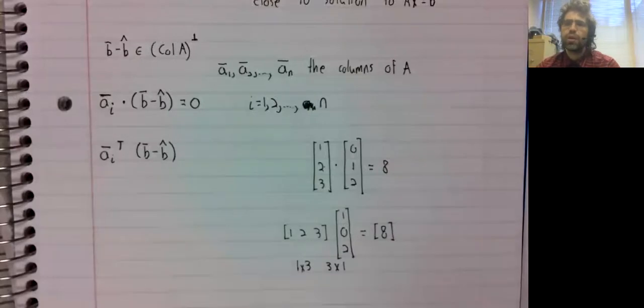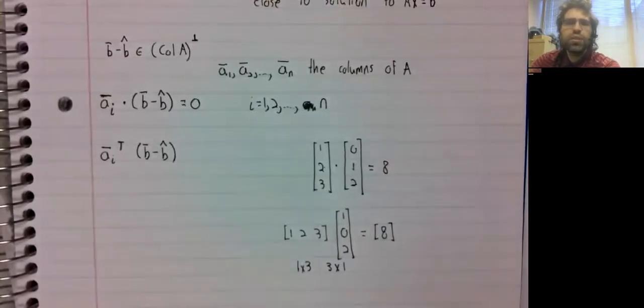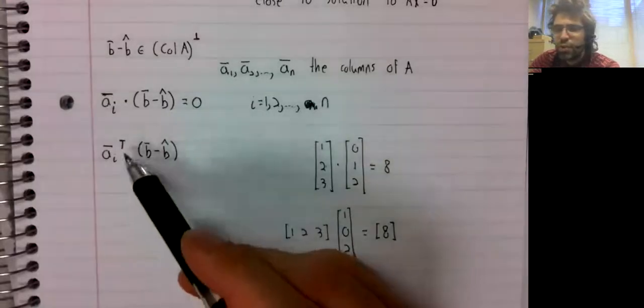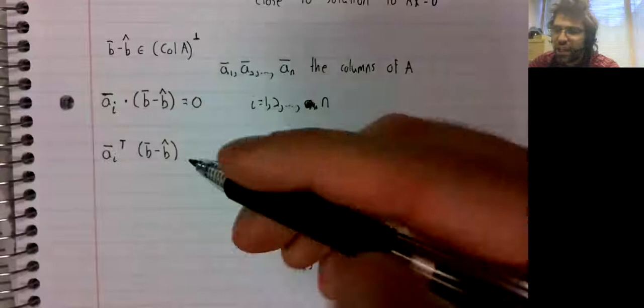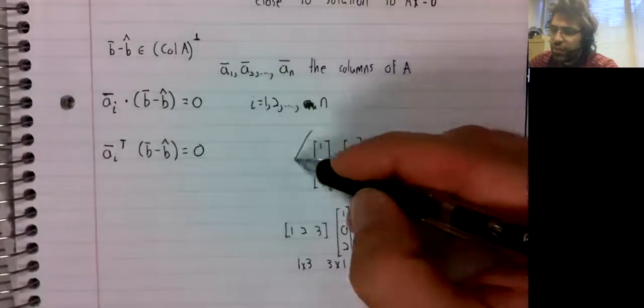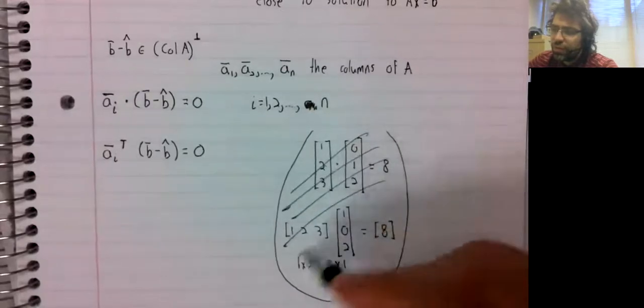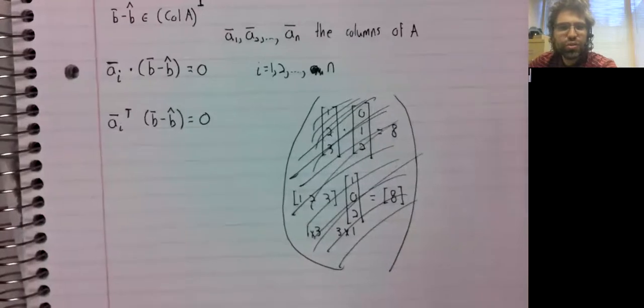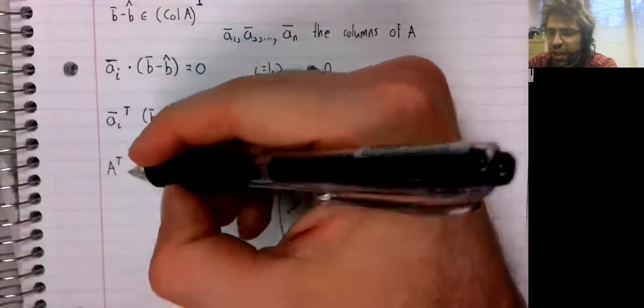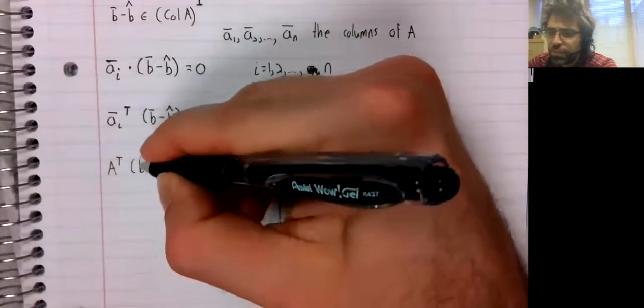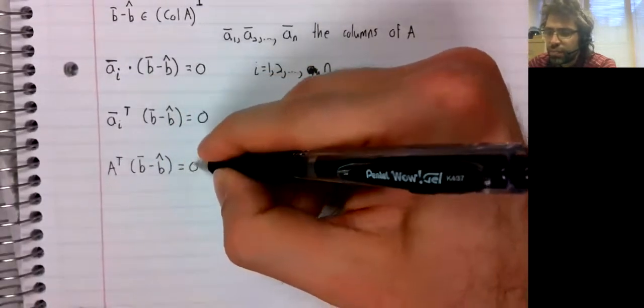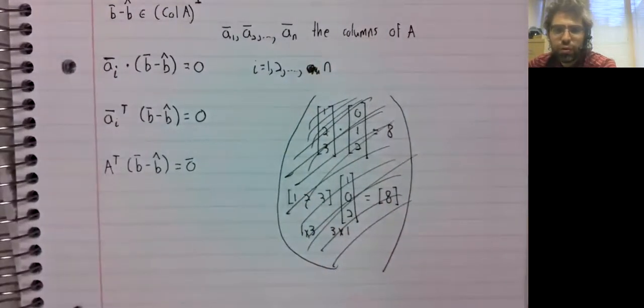But that little distinction doesn't bother us. The vector space of one by one matrices is isomorphic to the vector space of real numbers. So we'll just think of these as being the same and remove that as a potential distraction. What this tells us is that A transpose times b minus b hat equals the zero vector.